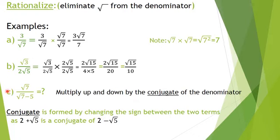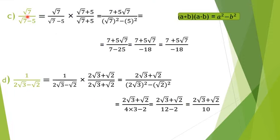In part C, you must multiply up and down by the conjugate. I'll copy the fraction and multiply up and down by the conjugate — changing the minus to plus. Now let's multiply the denominator to get rid of the radical using the rule: a minus b times a plus b equals a squared minus b squared.